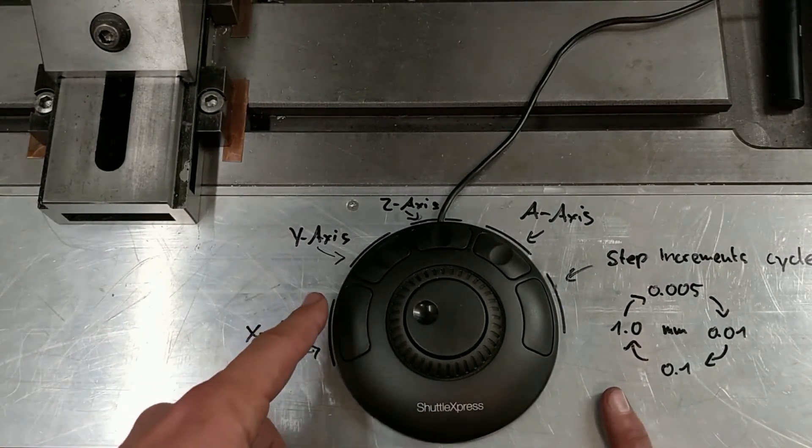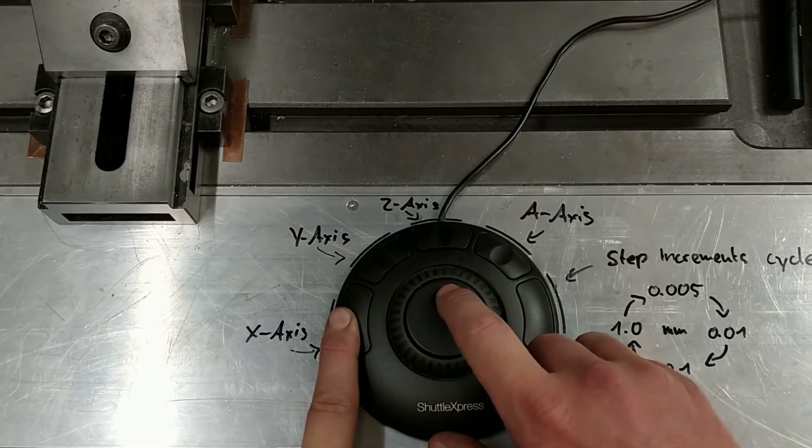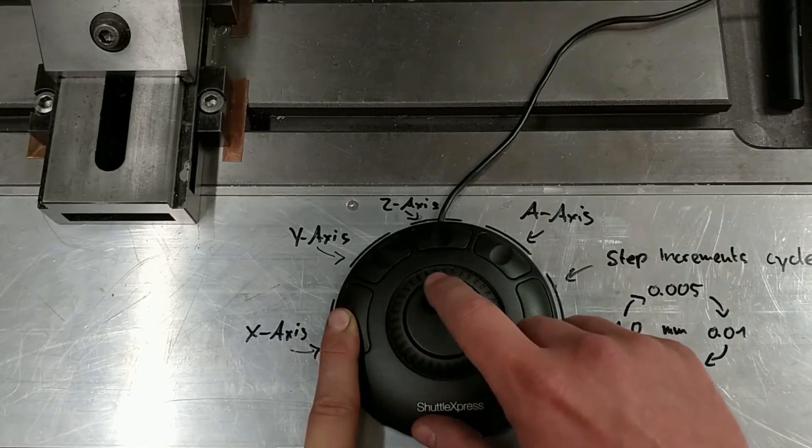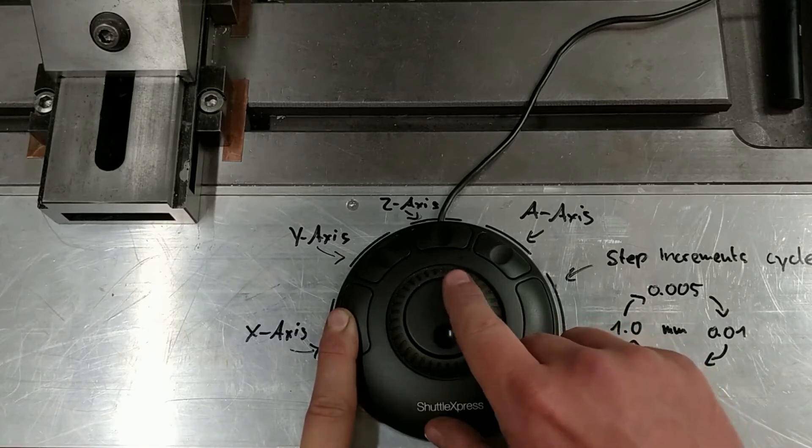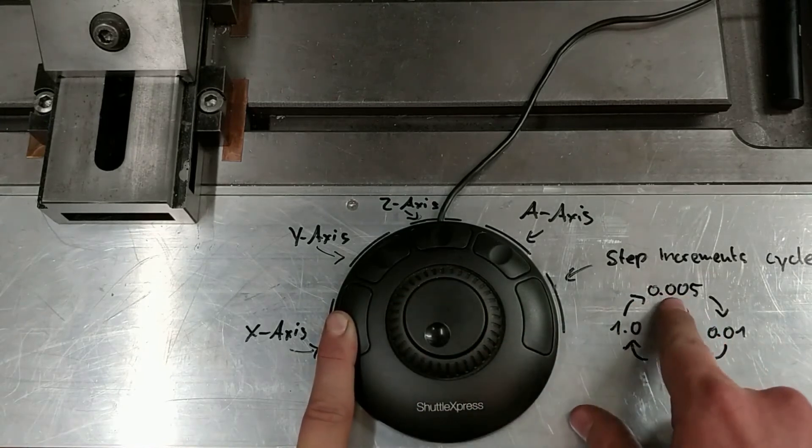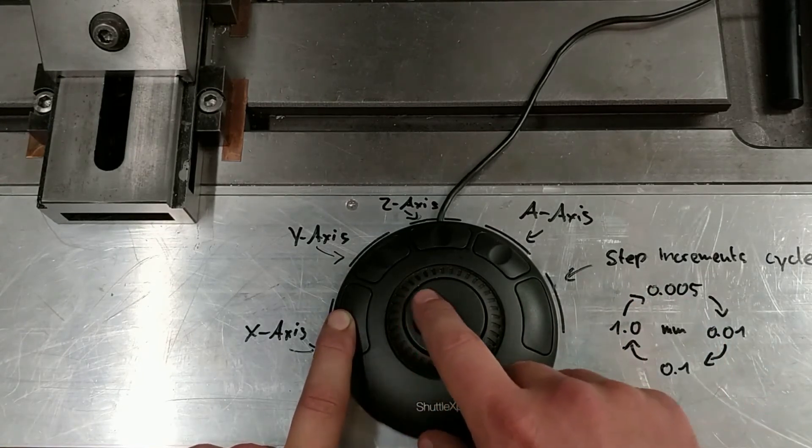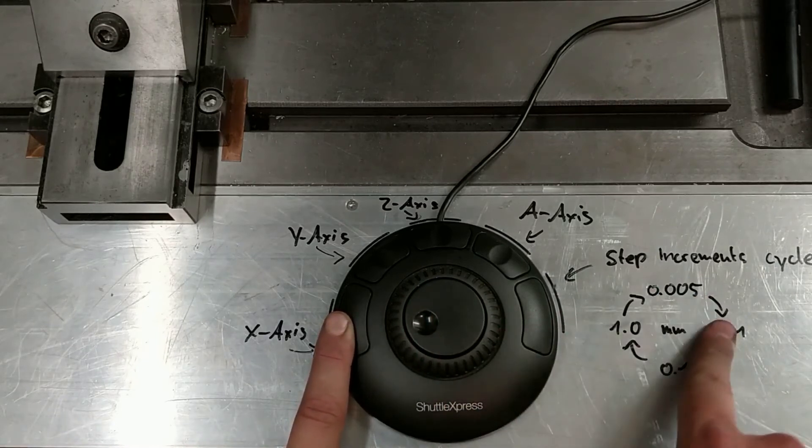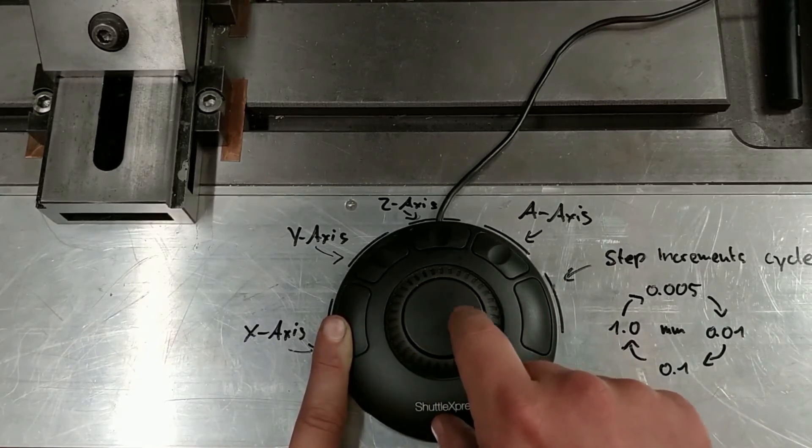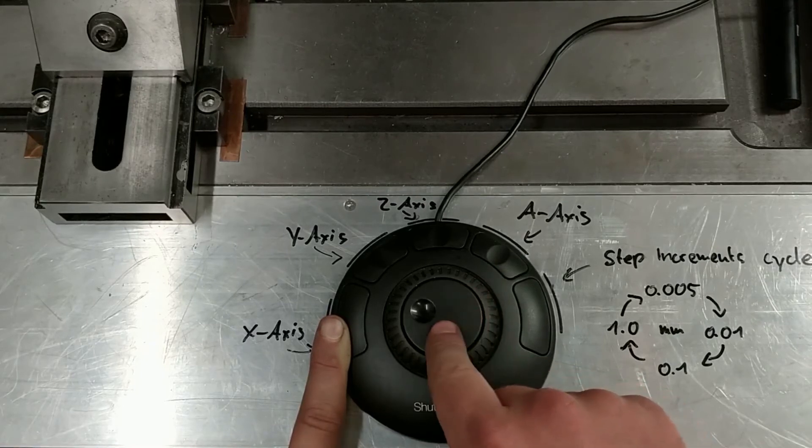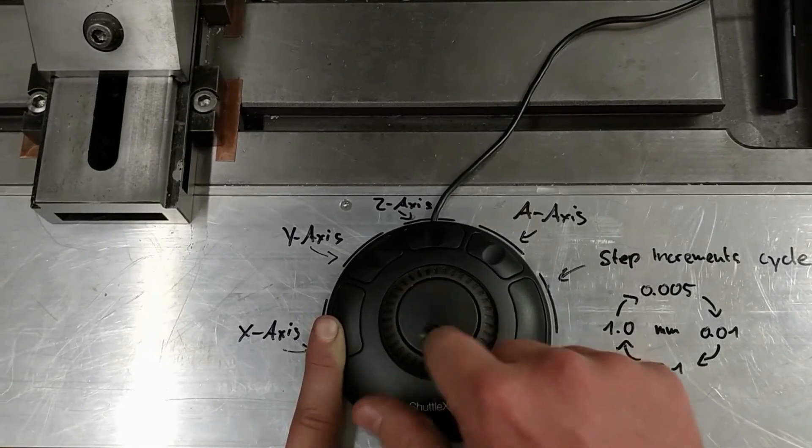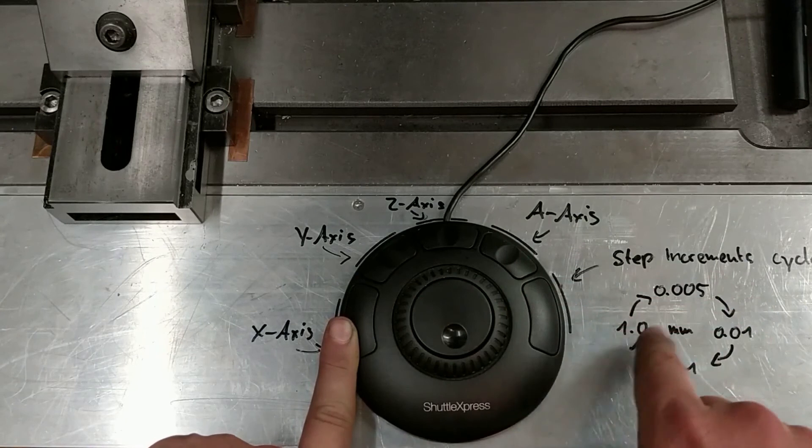That works the same way. I hold down the axis button and I can cycle through. Maybe you can hear it. So now we are at, I think it should be 0.05 increments per step. But we can move to the next. So we just hit this button.